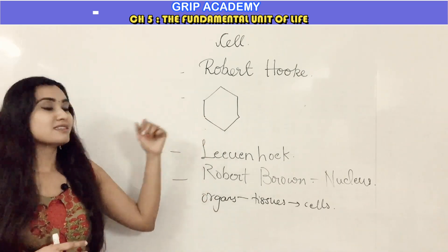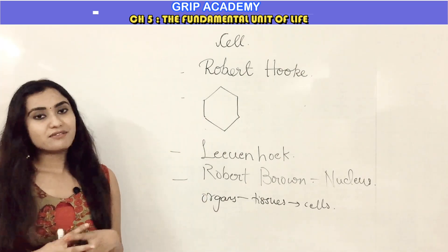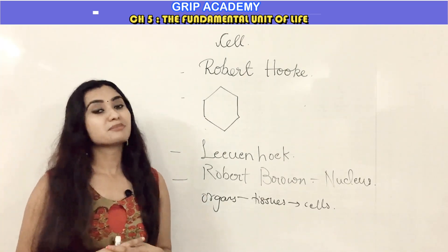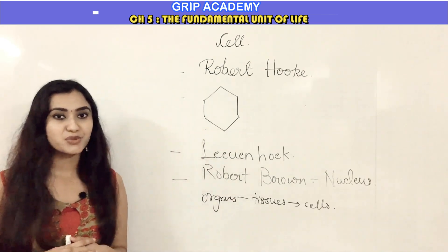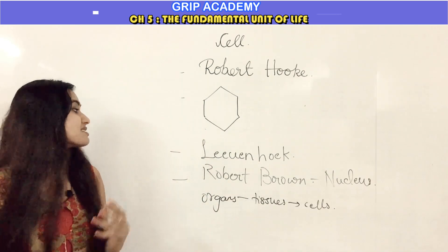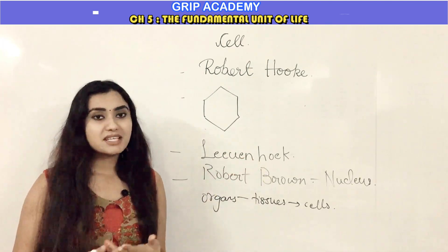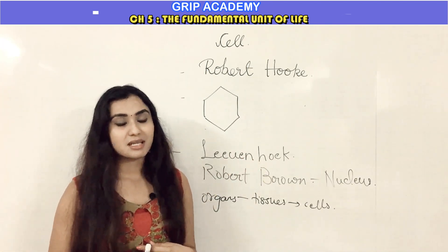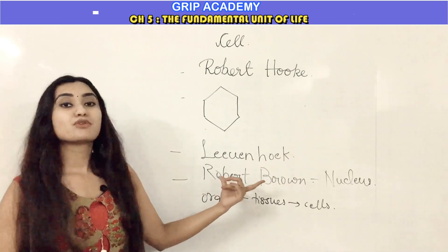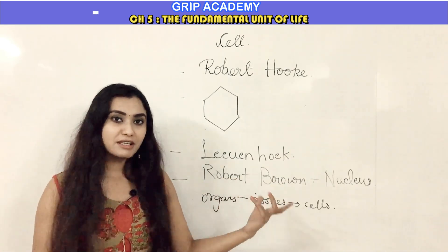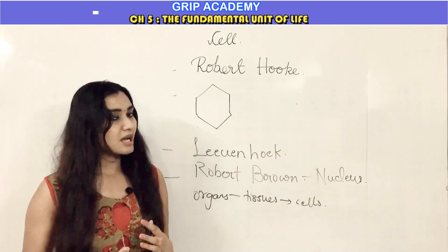From that date till now we are using the term cell in biology. With the invention of the magnifying lens, it led to the discovery of the microscopic world. A scientist Leeuwenhoek found living cells for the first time in pond water, and then a scientist named Robert Brown found the nucleus for the first time.